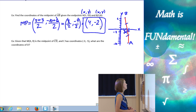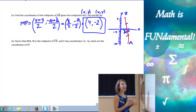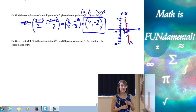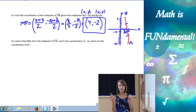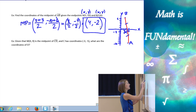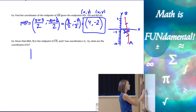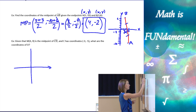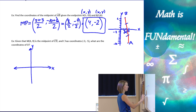Example 2: given that M is the midpoint of segment CD, M is at (4, −9), and C has coordinates (−3, −5), what are the coordinates of D? This problem works backward — instead of having two endpoints and finding the midpoint, we have one endpoint and the midpoint and need to find the other endpoint. I'll show you both a graphical and algebraic method.